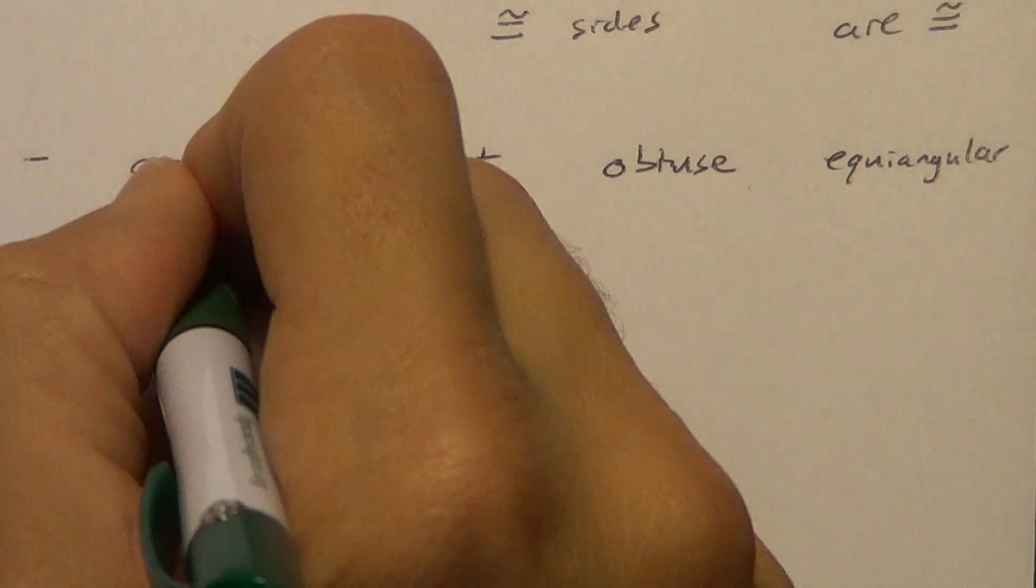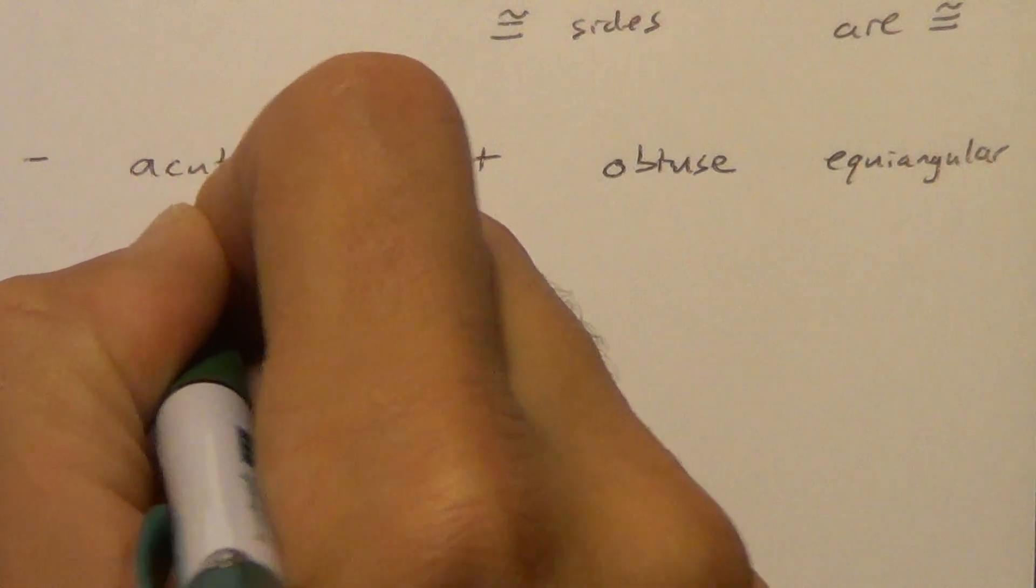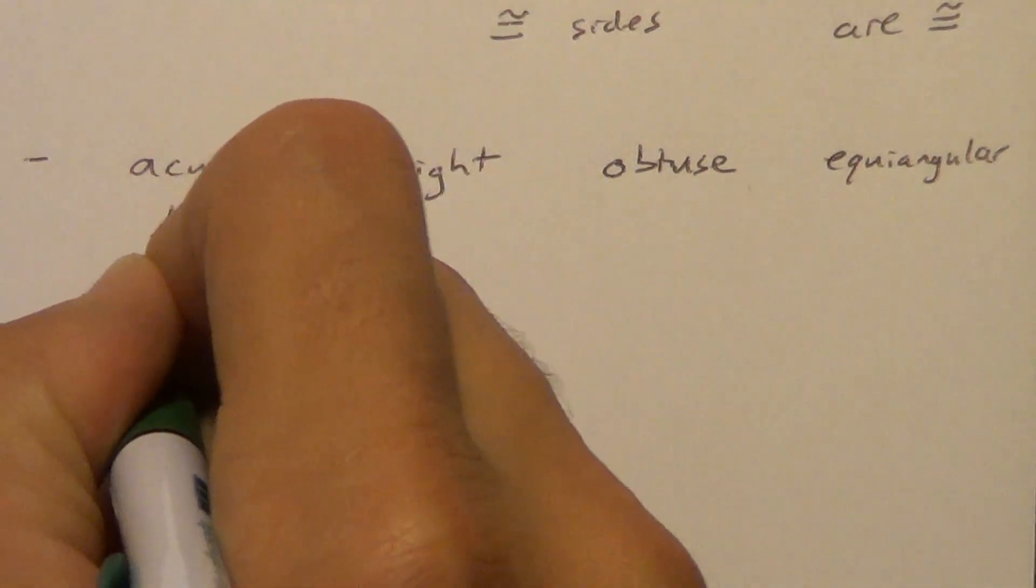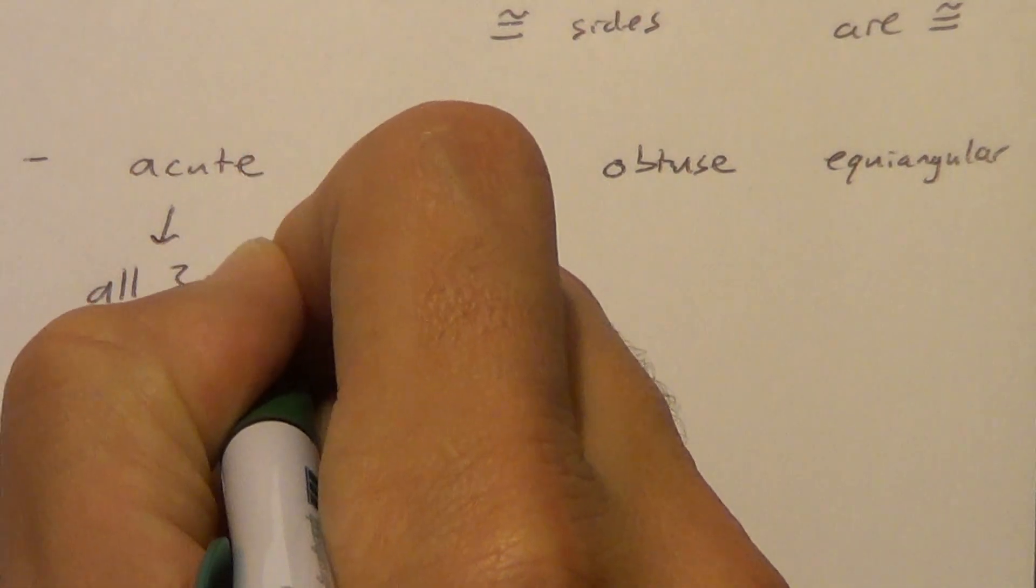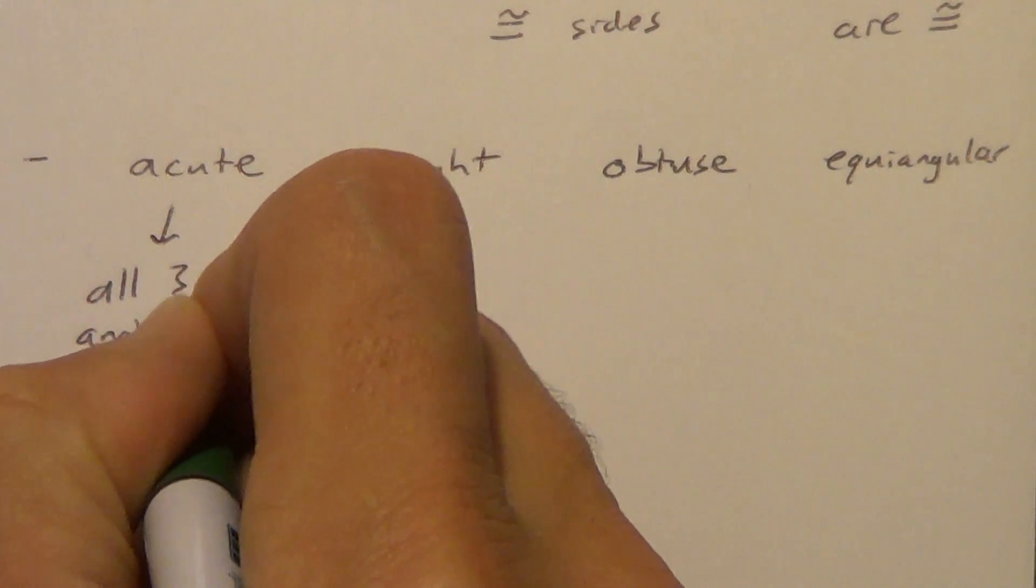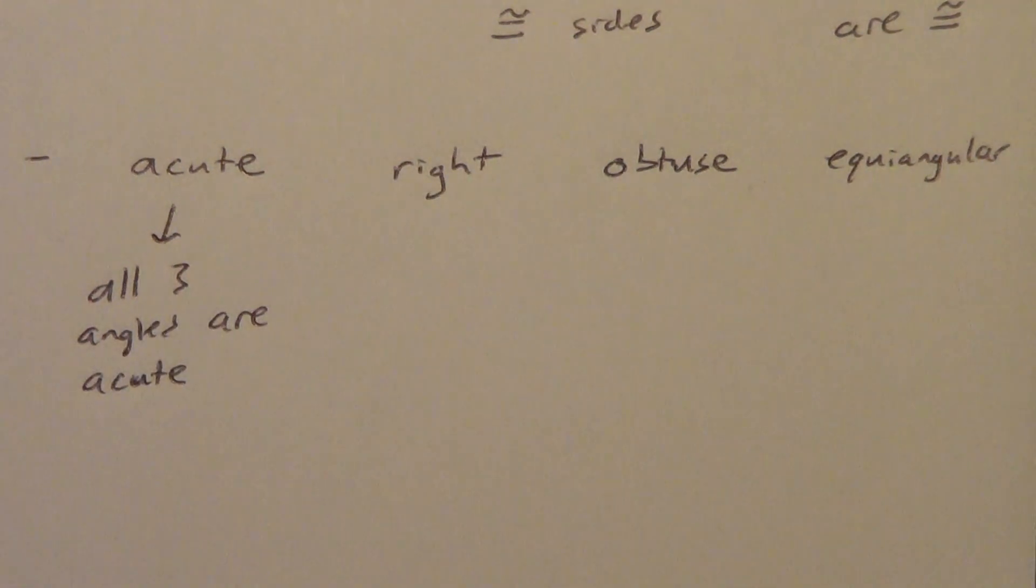Okay, an acute triangle. All three angles are acute. Okay, all three angles are acute. Remember, acute means less than 90 degrees.